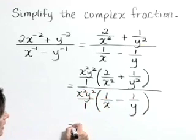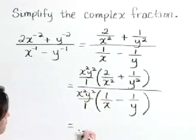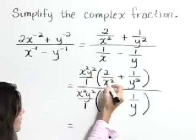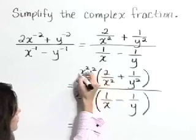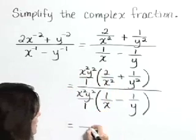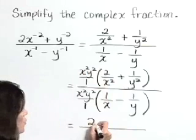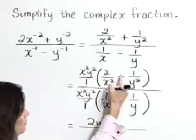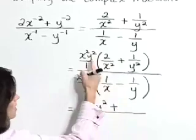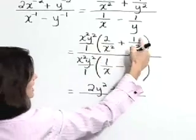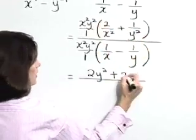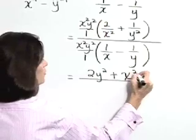Now let's multiply and cancel common factors as we do this. In the numerator, x squared y squared times 2 over x squared — notice our x squareds are going to cancel — leaving 2y squared. Plus, multiplying times 1 over y squared, the y squareds cancel, leaving x squared.